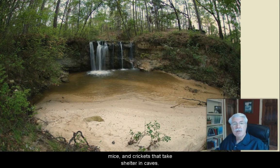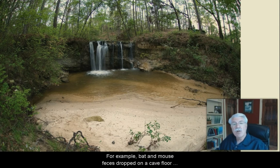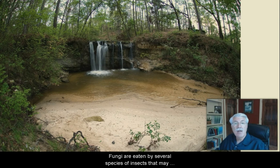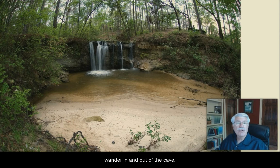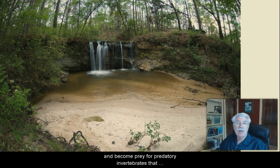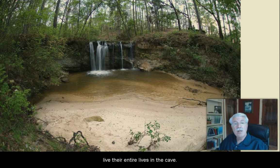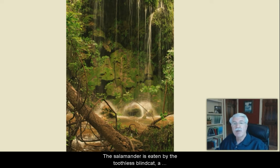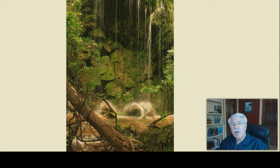Food in the cave can also come from organisms such as bats, mice, and crickets that take shelter in caves. They can become food or prey for cave dwellers, or they can also leave food behind. For example, bat and mouse droppings on a cave floor provide nutrients that fungi need to grow. Fungi are eaten by several species of insects that may wander in and out of the cave. These insects reproduce very rapidly, they move about the cave, and they become prey for predatory invertebrates that live their entire lives in the cave. These invertebrates fall into the water and can be swept deep into the aquifer where they can be eaten by species such as the Texas blind salamander. The salamander itself can be eaten by other species such as the Toothless Blind Cat — a catfish that can live over 1,000 feet below the Earth's surface.